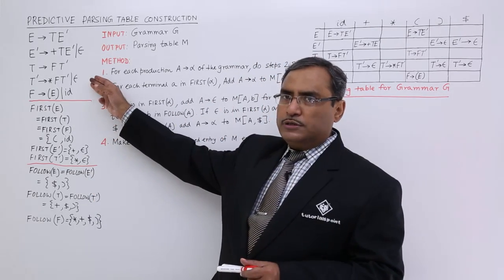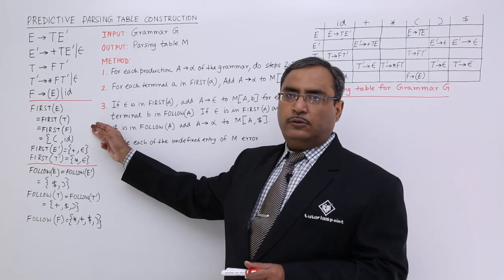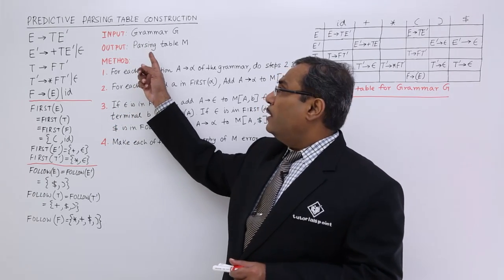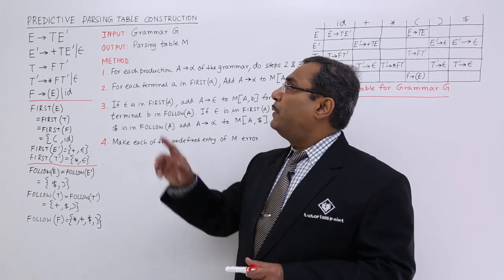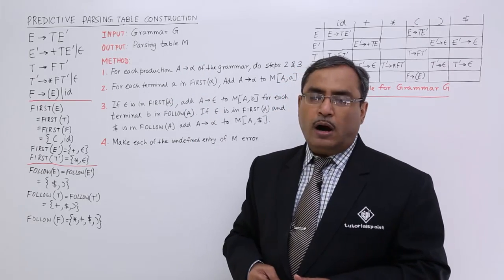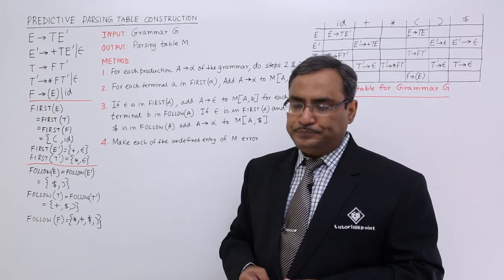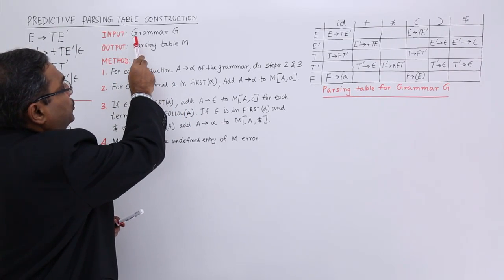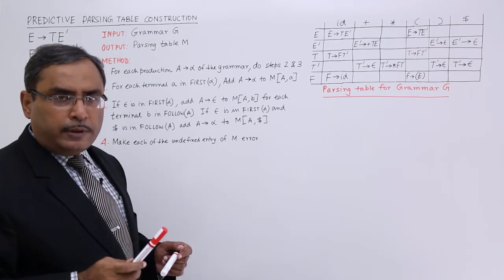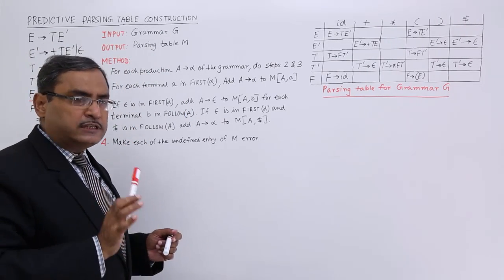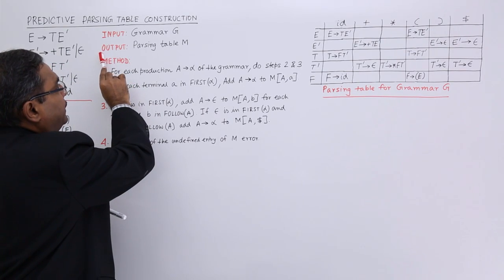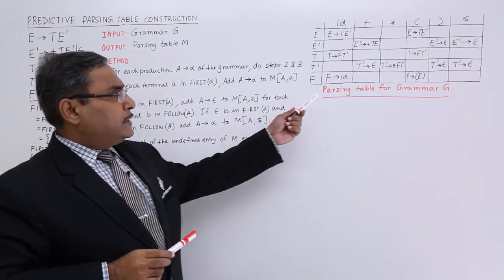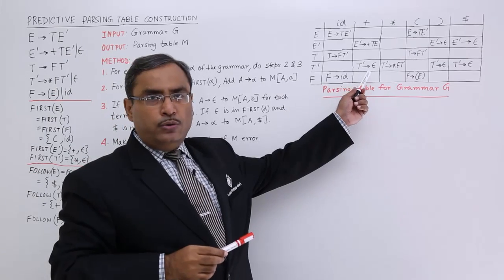This grammar is given — the first has been calculated and the follow has been calculated. Now I shall go for the predictive parsing table construction. The input is grammar G along with the first and follow, and the output is a parsing table M. This is the parsing table we are going to construct.